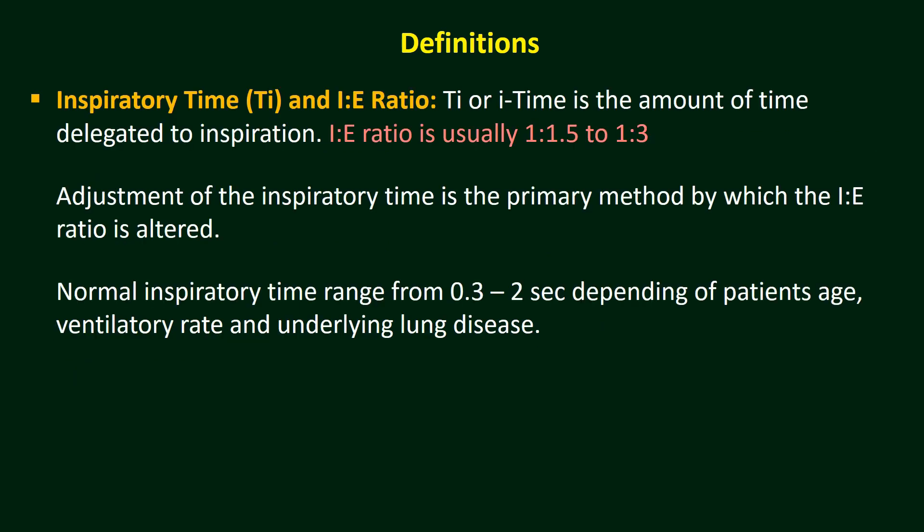Inspiratory Time Ti or Itime is the amount of time delegated to inspiration. The Inspiratory-Expiratory Ratio is usually 1:1.5 to 1:3, but outside this range is sometimes used according to the patient's condition. Less than 1:1.5 — a ratio of 1:1 — is sometimes used in small premature neonates and ARDS. Even inverse ratio like 2:1 is also used in ARDS patients. A ratio more than 1:3 is used in hyperreactive airways disease like asthma.